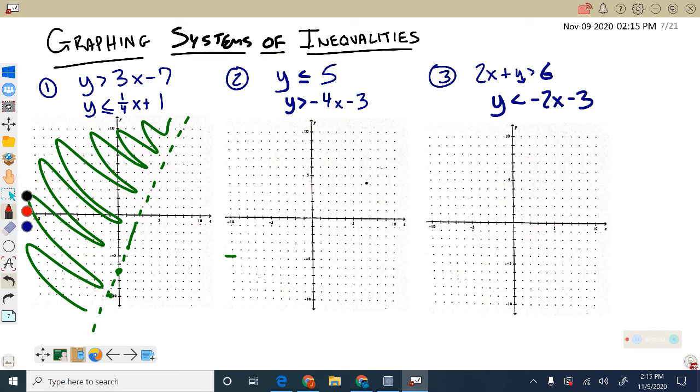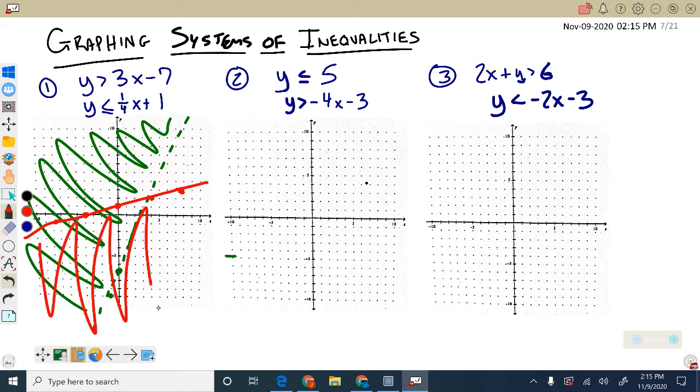Well, now I can look at the second half, the y equals 1 fourth x plus 1, so there's 1, we're going up 1 over 4, up 1 over 4, right there, or down 1 to the left 4. And this is a solid line, and I'd be shading this one below my red line.